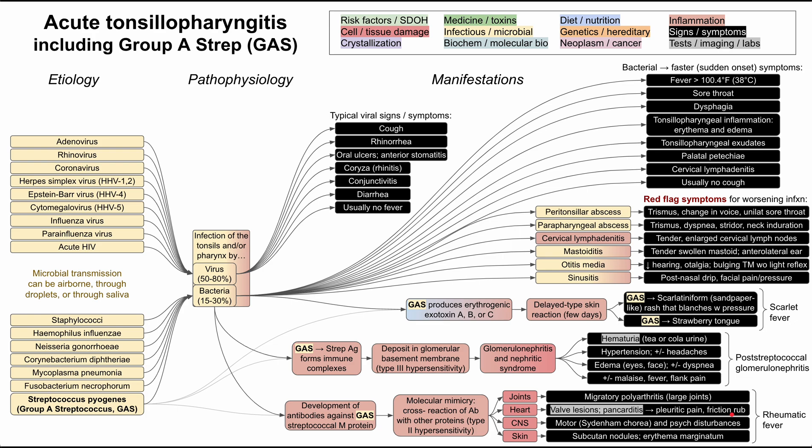In the joints, rheumatic fever can manifest as migratory polyarthritis, usually affecting large joints like the knees, elbows, and hips. In the central nervous system, there are both motor symptoms and psychiatric disturbances. Sydenham's chorea is the name for the motor symptoms characteristic of rheumatic fever. The psychiatric disturbances can vary broadly — memory deficits, increased hunger, rudeness, or change in personality are all possible manifestations.